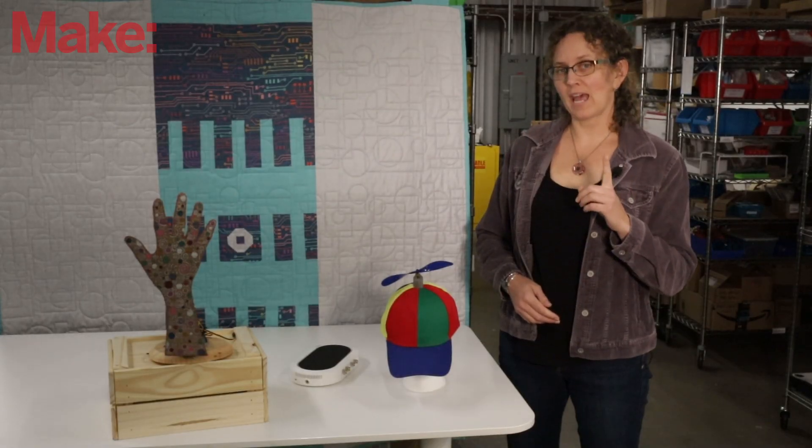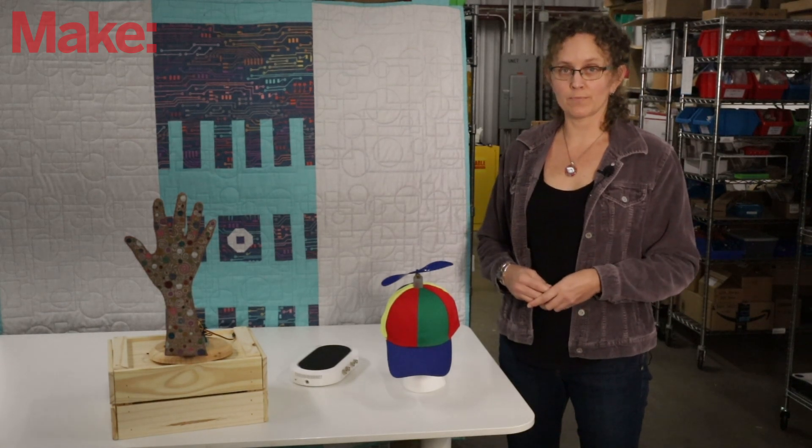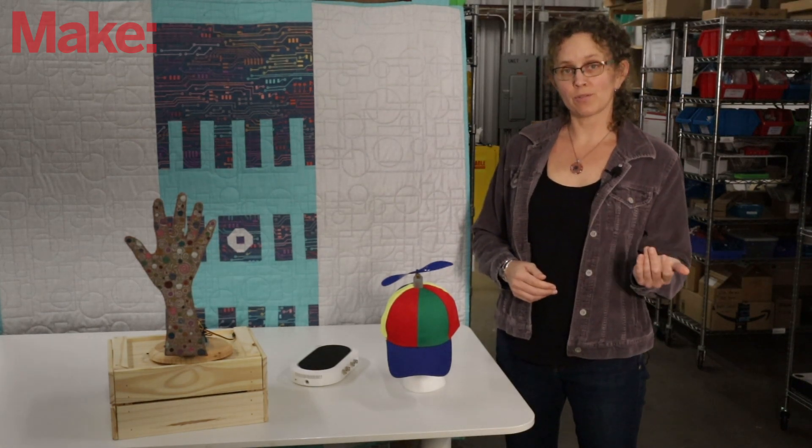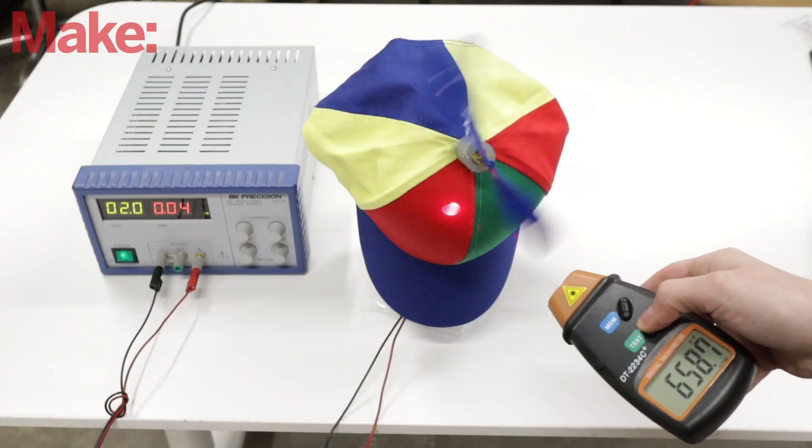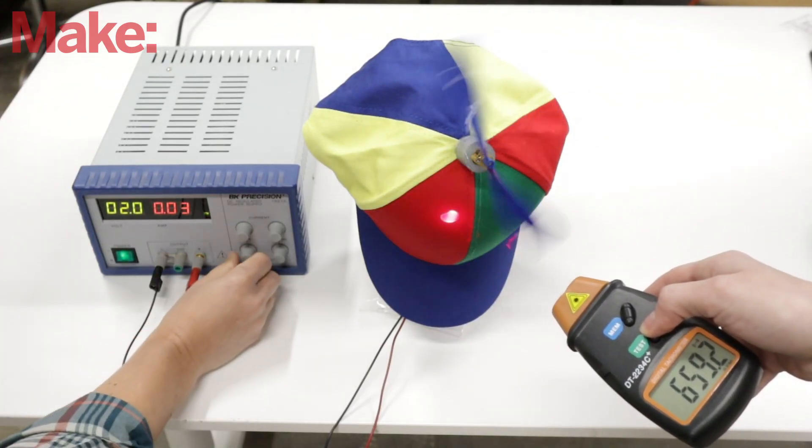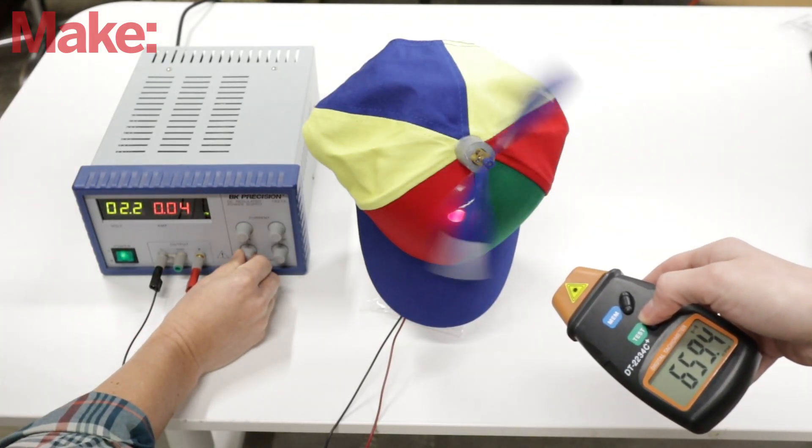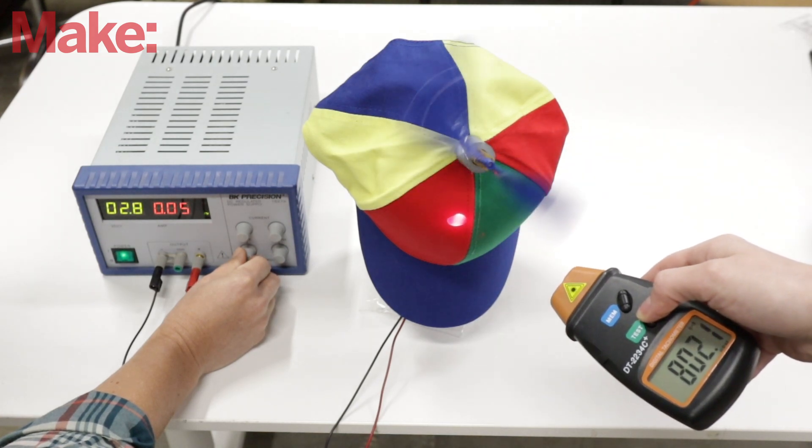There's one more layer to add to this, which is speed control. Motors are rated to run a certain speed when given a certain voltage, like this one, which is 160 rpm at 12 volts. But they'll run at different speeds depending upon the voltage applied to them, slower at lower voltages, and faster at higher voltages.